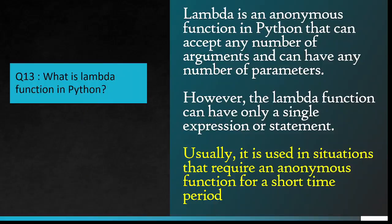Lambda is an anonymous function in Python that can accept any number of arguments and can have any number of parameters. However, the lambda function can have only a single expression or statement. Usually, it is used in situations that require an anonymous function for a short time period.